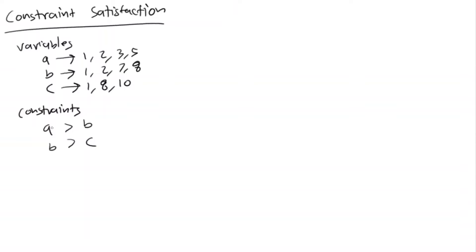You can probably think of a way to pick values satisfying these constraints pretty quickly in your head. For example, a has to be the biggest, then b, then c. So we can pick a=5, b=2, c=1. That's a solution. But that's taking advantage of our human brain — computers cannot do that. So we need to develop a systematic way of solving this that an algorithm can execute.